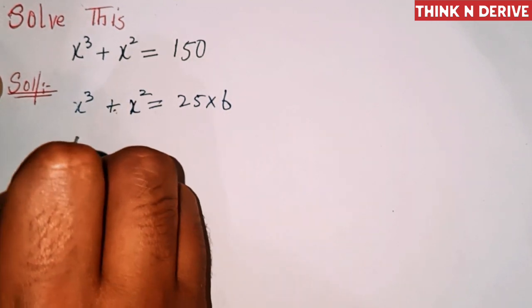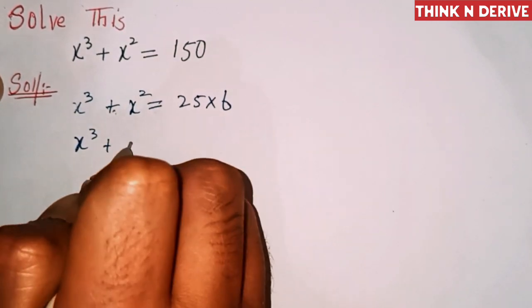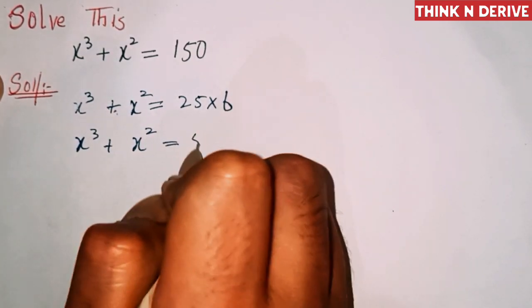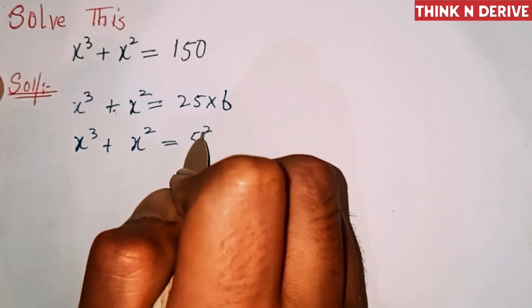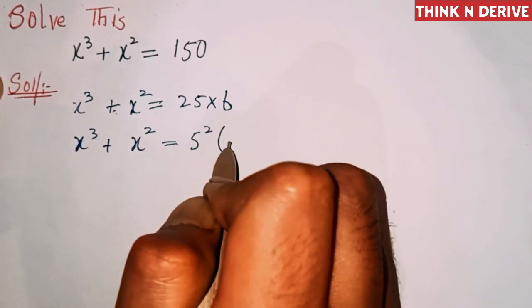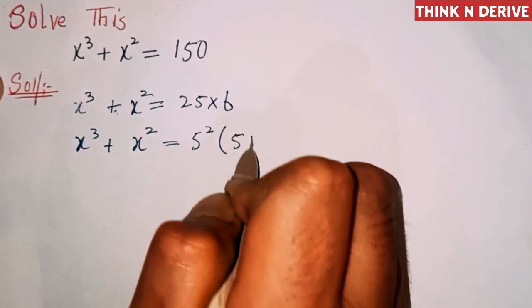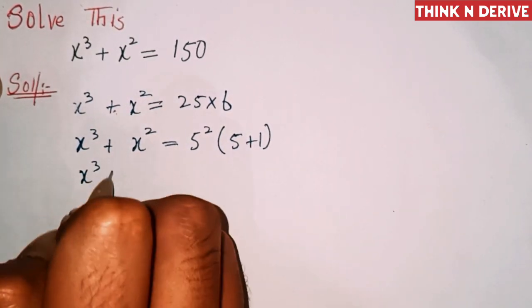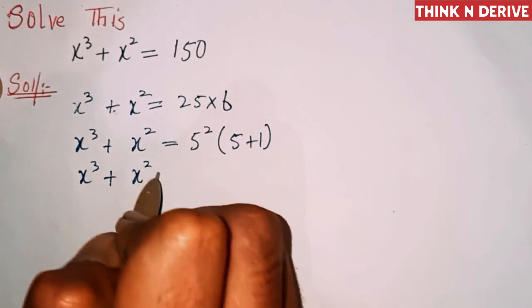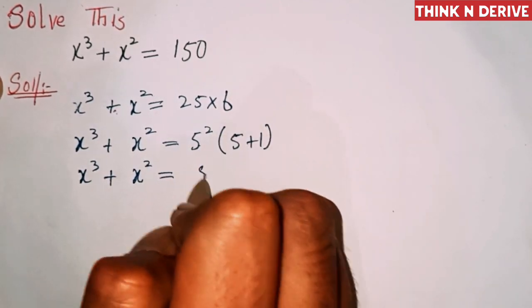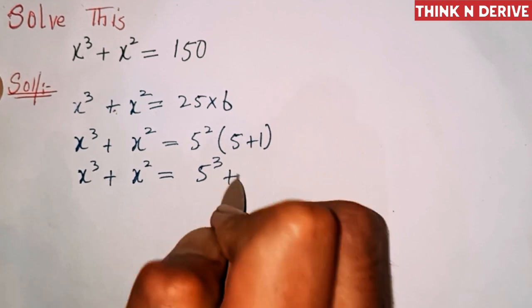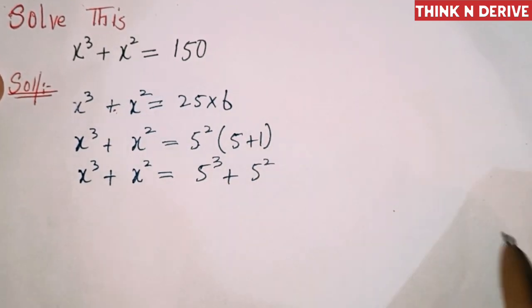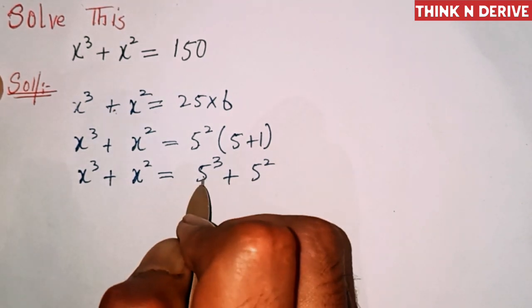So x³ + x² = 25 × 6. This 25 can be written as 5², and 6 is equal to 5 + 1. So x³ + x² = 5² × (5 + 1), which gives us 5² × 5 = 5³, and 5² × 1 = 5².